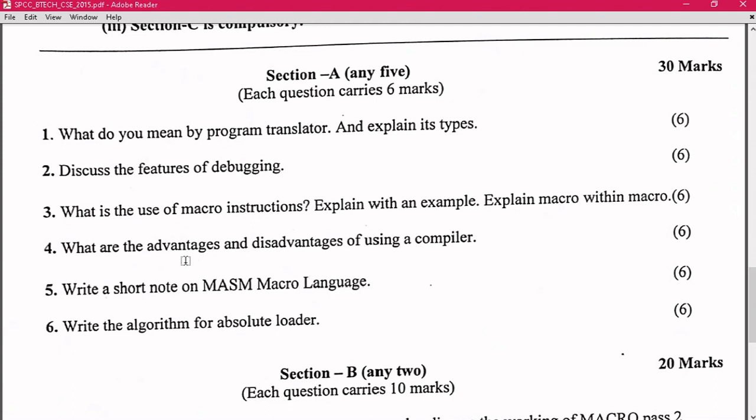Then, the advantages and disadvantages of using a compiler. Obviously, if I talk about compiler and compare it with an interpreter, compiler is slow because it has to compile the whole code. Until all the errors have been removed, it cannot be executed. So here you need to write all those points of compiler in terms of its advantages and disadvantages with the interpreter.